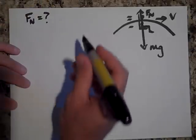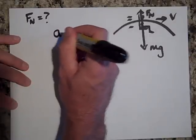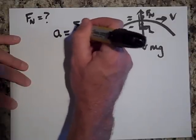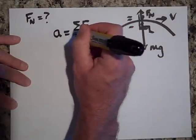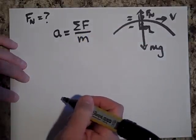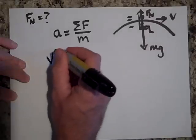Okay. So this is how easy it is. You say a equals F net over m. But I kind of know the a. The a is v squared over R.